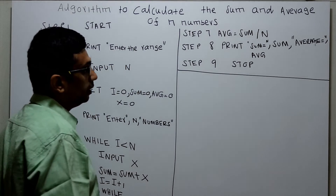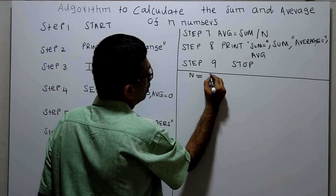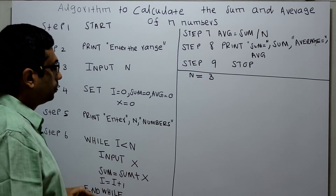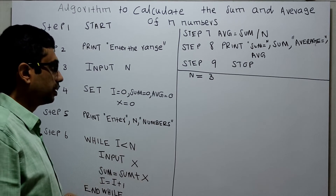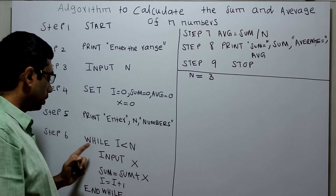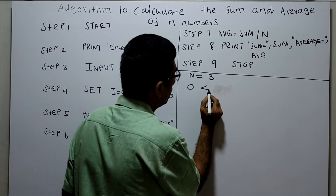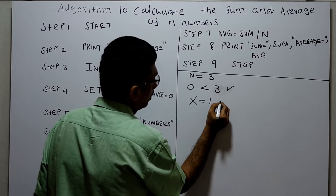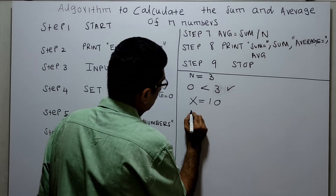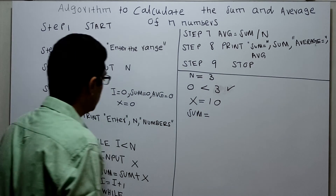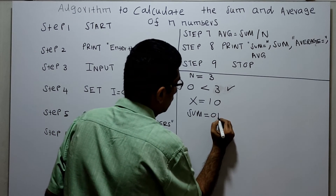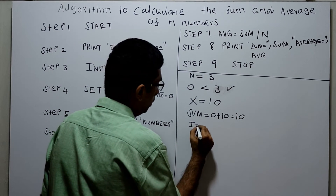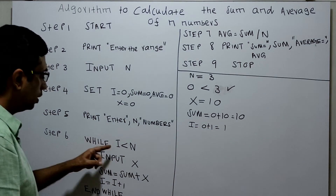Now let's do a walkthrough. Enter the range: n equal to 3. So i equal to 0, sum equal to 0, avg equal to 0, x equal to 0. The algorithm asks 'enter three numbers'. While loop: 0 less than 3 is true, input x — I give 10. Sum equal to 0 plus 10, so sum equals 10. Then i equal to 0 plus 1, so i equal to 1.